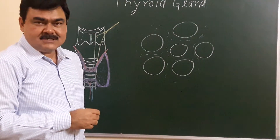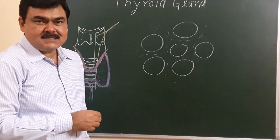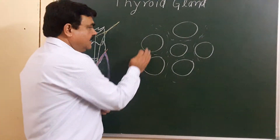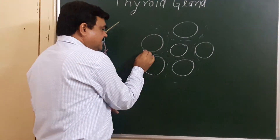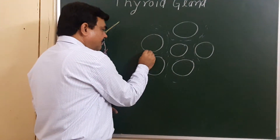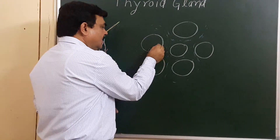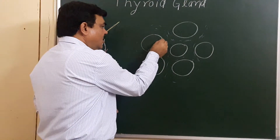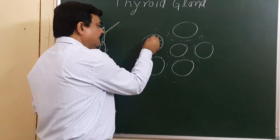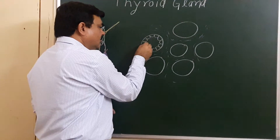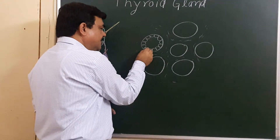The two cell types are follicular cells and parafollicular or C cells. Here is a thyroid follicle. This is the basement membrane, and numerous cuboidal cells — the follicular cells — are present.